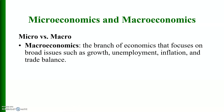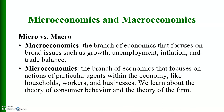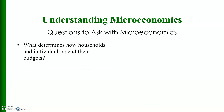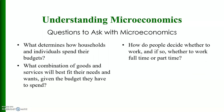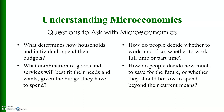Macroeconomics is the branch of economics that focuses on broad issues such as growth, unemployment, inflation, and trade balance. Microeconomics is the branch that focuses on the actions of particular agents within the economy, including households, workers, and businesses. In microeconomics we learn the theory of consumer behavior and the theory of the firm — what determines how households and individuals spend their budget, what combination of goods and services will best fit their needs, how people decide whether to work full-time or part-time, and how people decide how much to save or borrow.